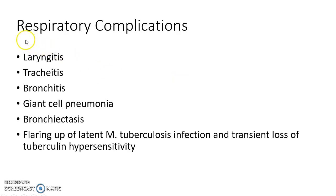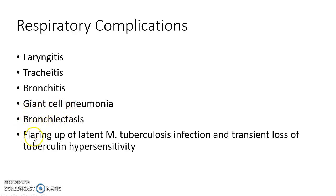The respiratory complications of measles include laryngitis, tracheitis, bronchitis, giant cell pneumonia, and bronchiectasis. There can also be flaring up of latent Mycobacterium tuberculosis infection and transient loss of tuberculin hypersensitivity. These are all due to widespread mucosal damage and significant immunosuppression.